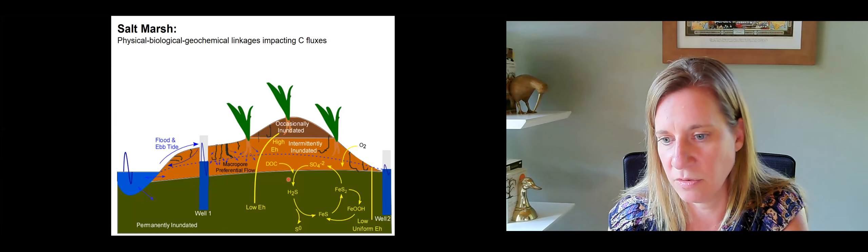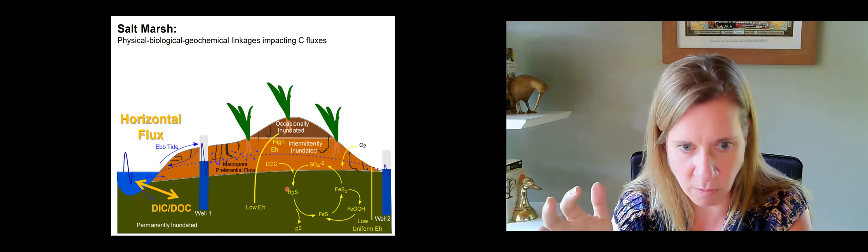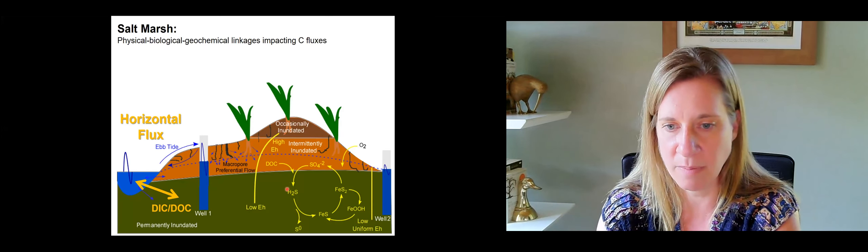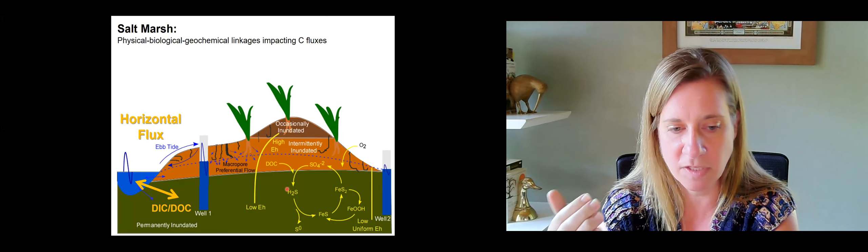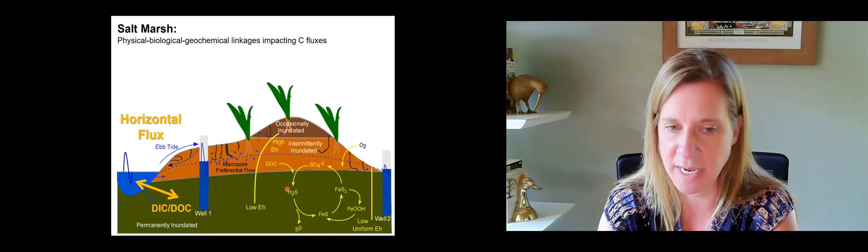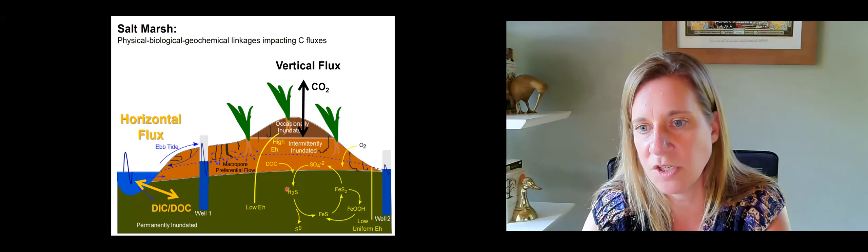Those redox dynamics are going to affect cycling of sulfur, iron, nutrients, carbon, etc. One thing we wanted to quantify in this work — and why it's hopefully relevant to those of you working on SGD — is the horizontal flux of carbon between the marsh platform and the tidal channel. So movement of dissolved inorganic carbon and dissolved organic carbon between the marsh and the channel, which would eventually make its way out to the ocean. The other thing we're interested in is the vertical flux: production of carbon dioxide in the sediments making its way up into the atmosphere, or the opposite, the CO2 flux into the marsh.